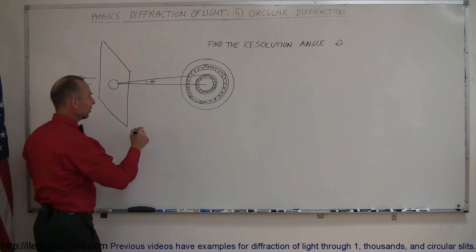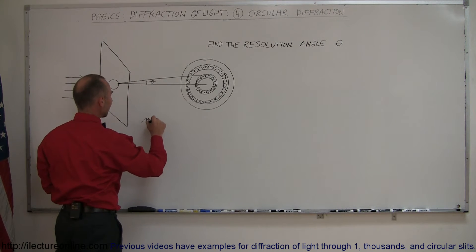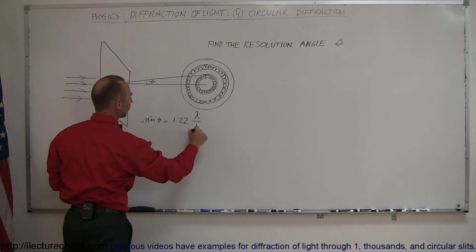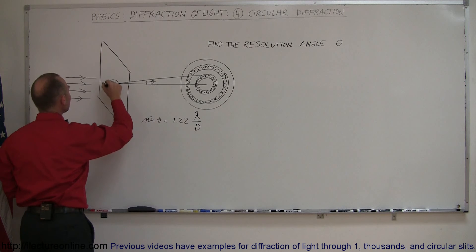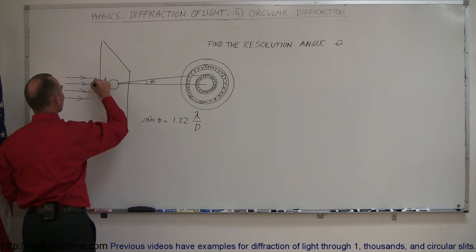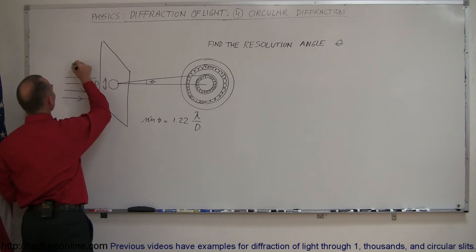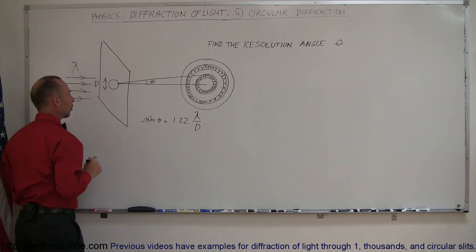The equation says that the sine of theta is equal to 1.22 times lambda over D. D is the diameter of the circular opening, and lambda is the wavelength of the light that goes through the circular opening.